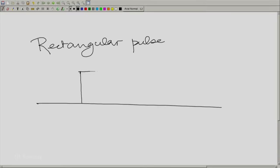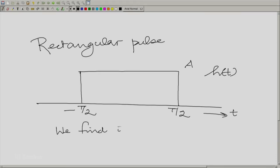Let us take one of the most traditional functions. Let us begin with what is called the rectangular pulse. We make the pulse symmetric, height a going from minus T by 2 to plus T by 2 on the time axis. We call this function h of t or x of t. We find its Fourier transform.